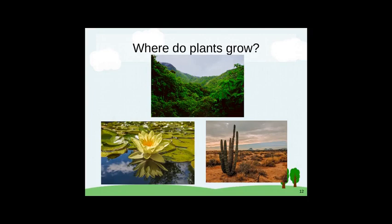Where do plants grow? Plants live almost everywhere on Earth. They grow inside and outside. They grow in rainforests and deserts, on lush farmland, and barren tundra. They grow on mountaintops and in the open ocean. Plants grow in soil, in sand, on rocks, and in the water. Plants grow wherever they can get what they need.